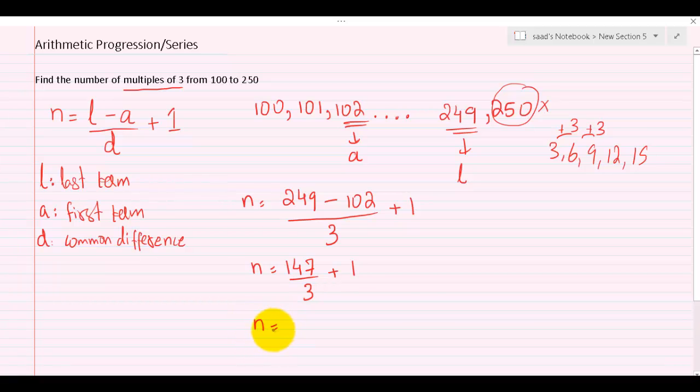So 147 can be divided by 3. 3 ones are 3, 3 fours are 12, 2 carried forward, giving us 49. So 49 plus 1 is 50. So from 100 to 250 we have a total of 50 multiples of 3.